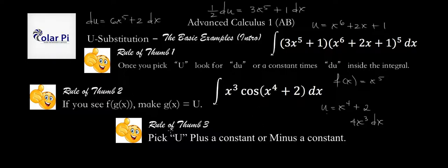So even if we'd started off on the wrong foot with the first rule of thumb and thought u should be just x to the fourth, the third rule of thumb would have saved the day. And it would have told us to include the 2 with the x to the fourth, which of course, rule of thumb number 2 completely agrees with.